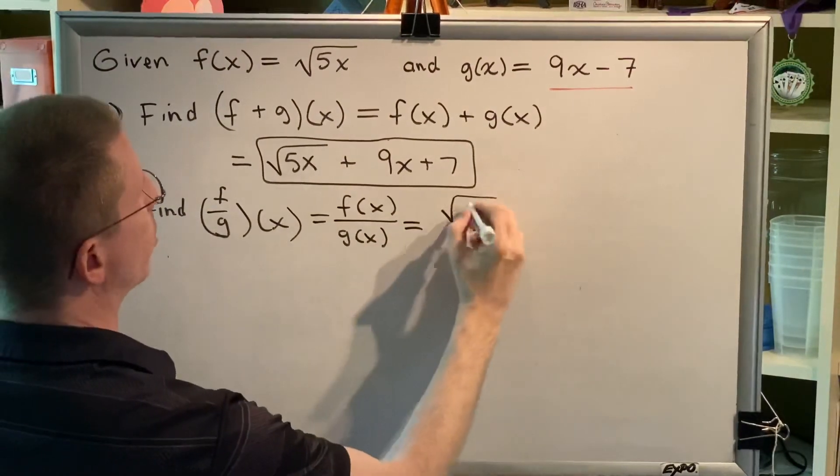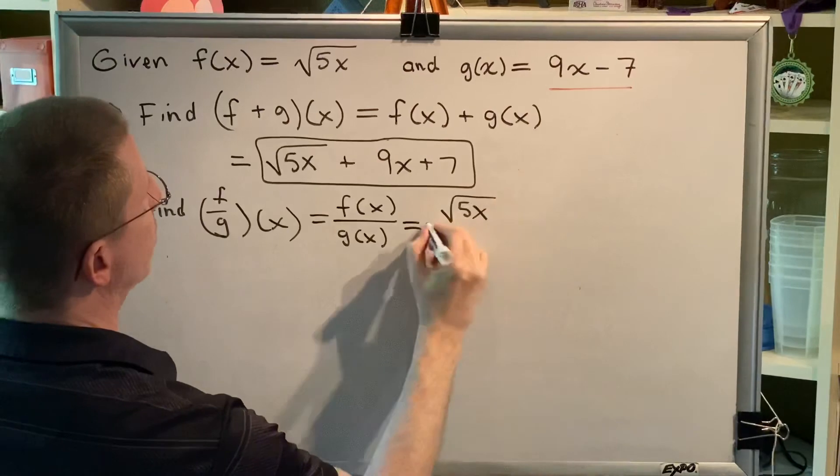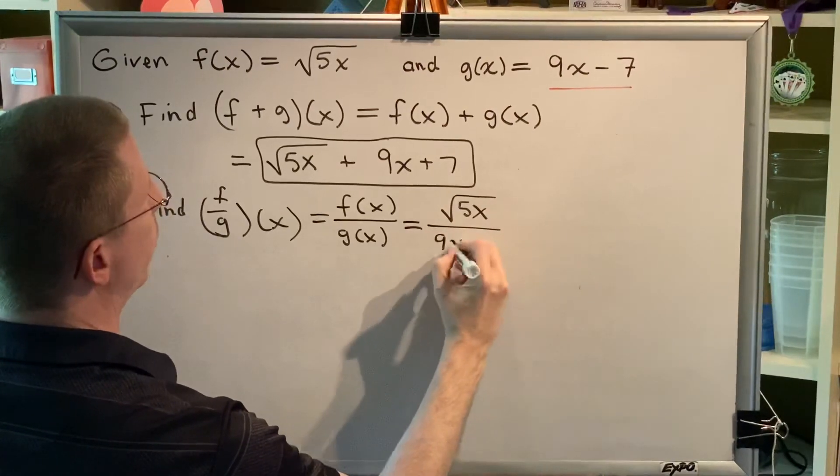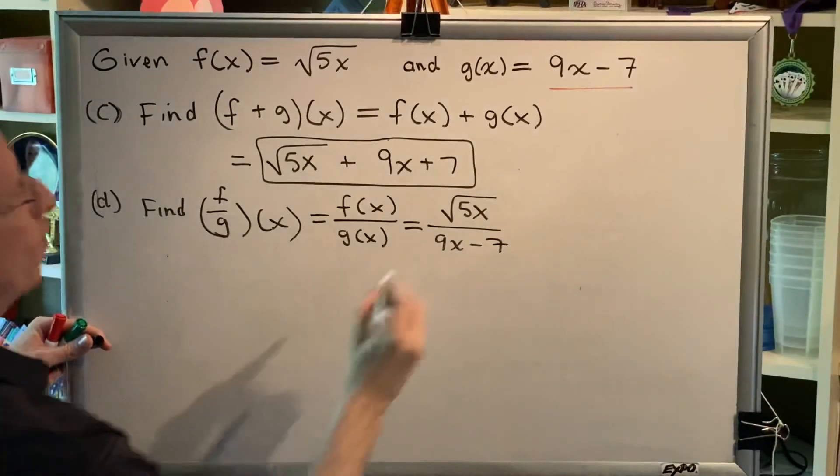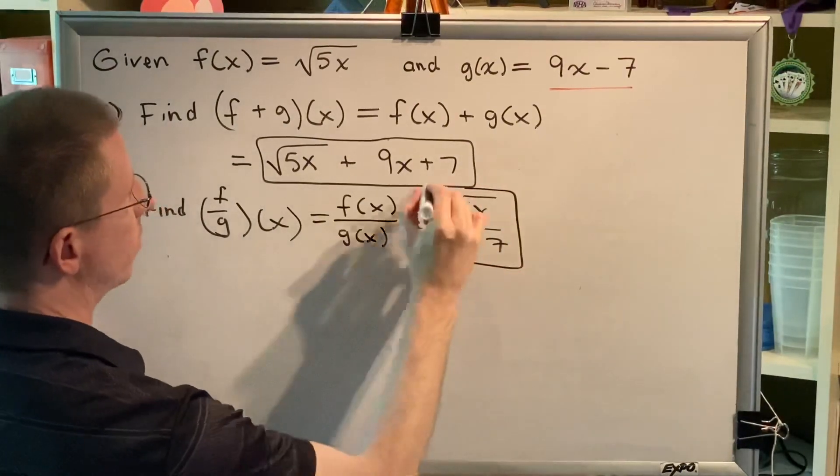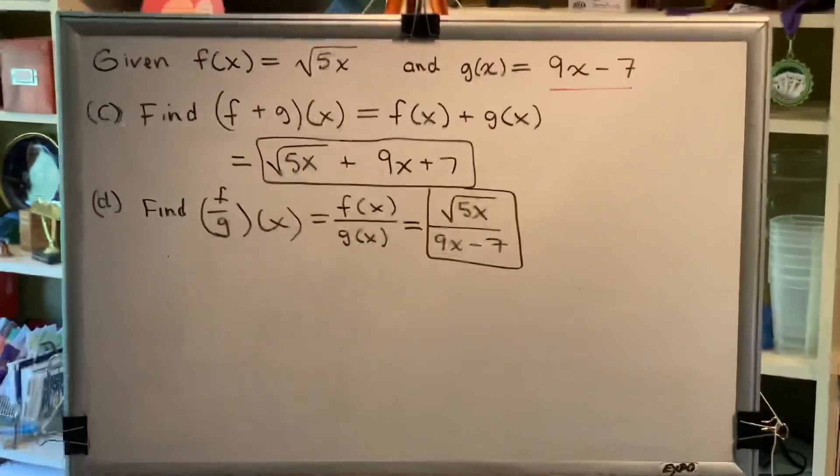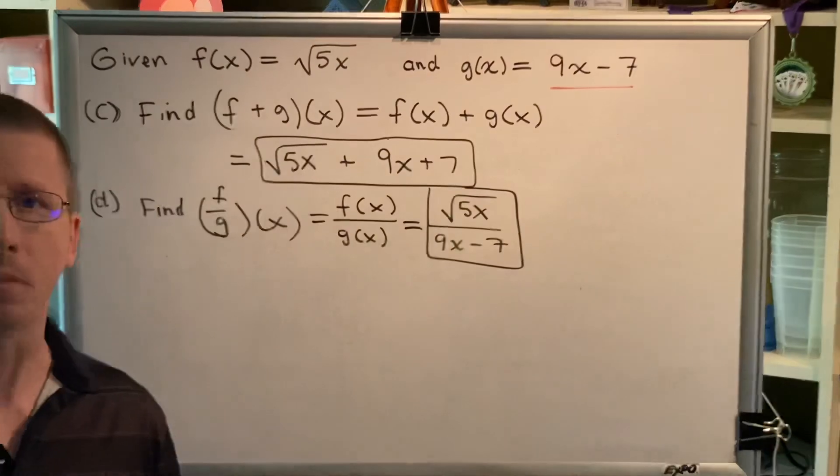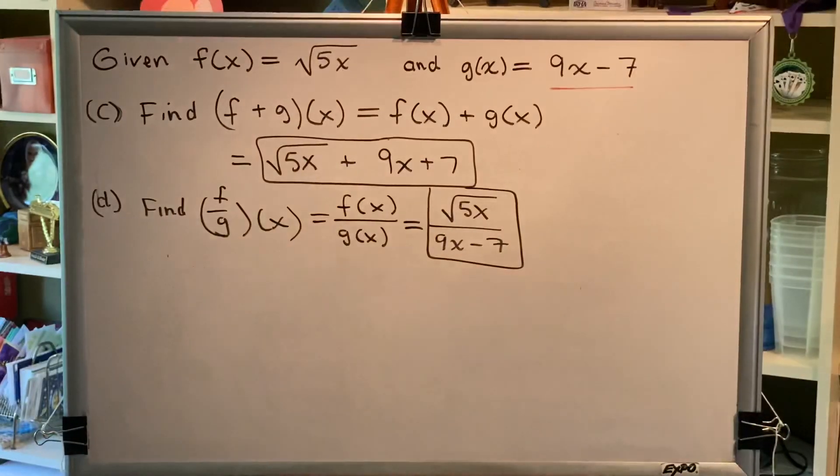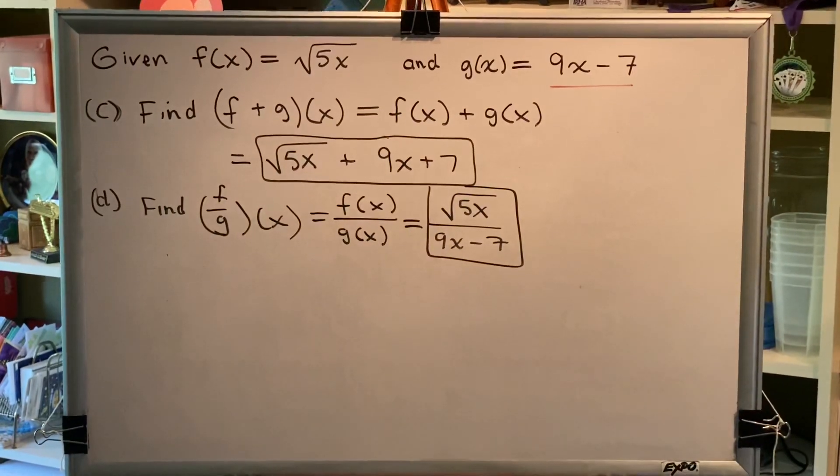Which, in this case, is the principal square root of 5x, divided by the difference, 9x minus 7. Nothing here can be simplified. So, this is our final answer. And that's the end of this problem.